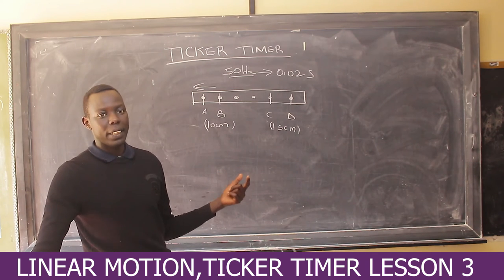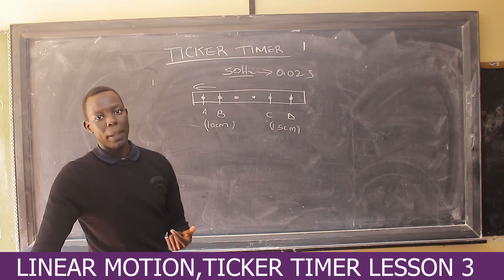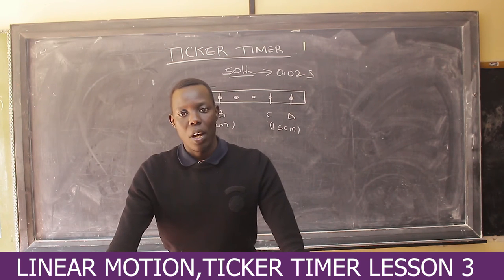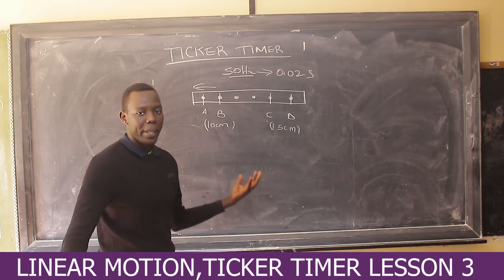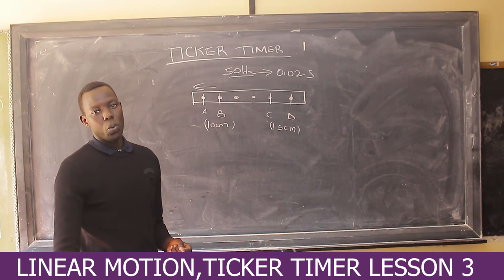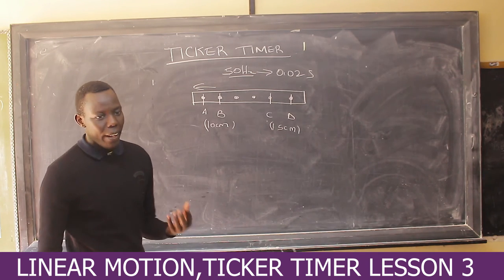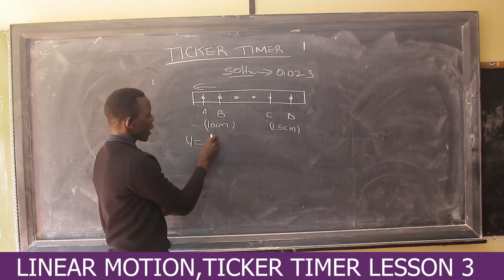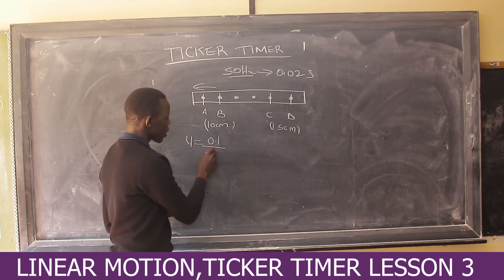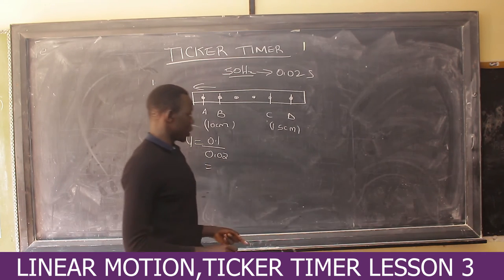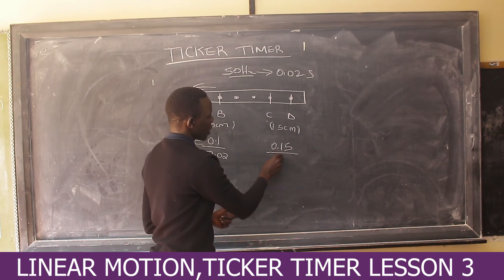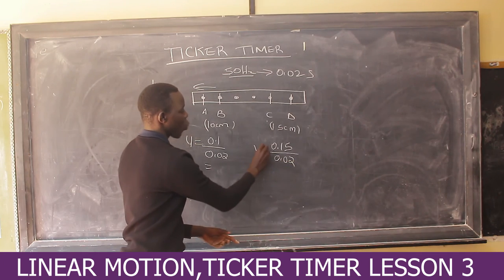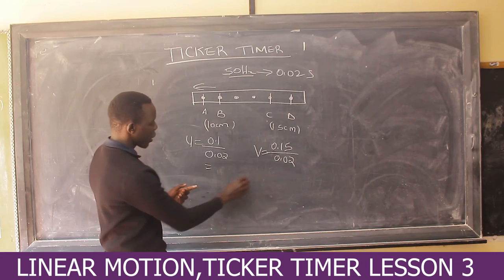We know speed is given in meters per second, so convert 10 cm to 0.1 m and 15 cm to 0.15 m. The initial velocity U equals 0.1 m divided by 0.02 s. The final velocity V equals 0.15 m divided by 0.02 s. You will complete those calculations, then get your initial and final velocity to apply the acceleration formula: a equals V minus U over T.